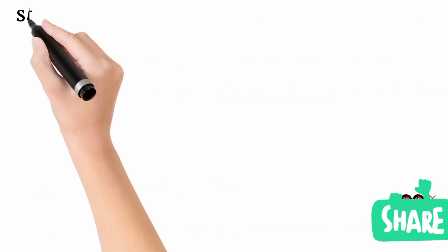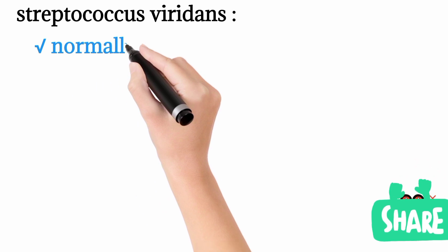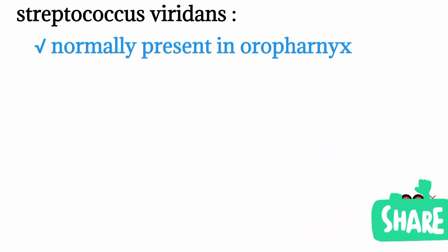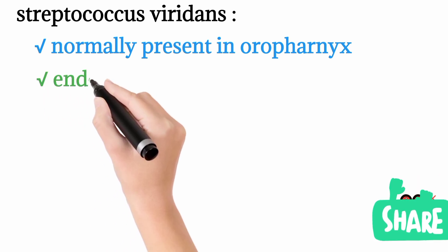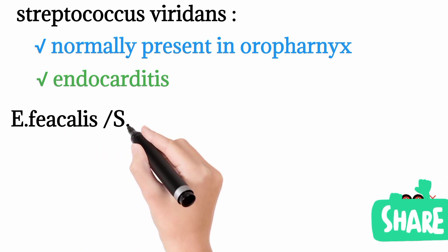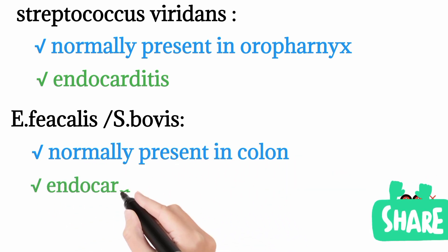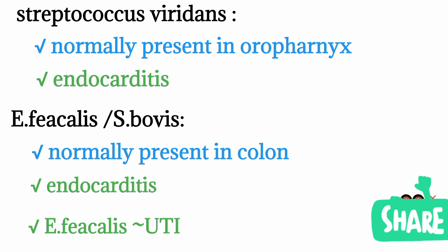Streptococcus viridans is normally present in the oropharynx and can cause endocarditis — affecting the inner layer of the heart, the endocardium. Finally, Enterococcus fecalis and Enterococcus bovis are closely related because both reside in the colon, and both can cause endocarditis. Additionally, Enterococcus fecalis can also cause urinary tract infection. That is the whole summary of all the organisms of Streptococcus species.